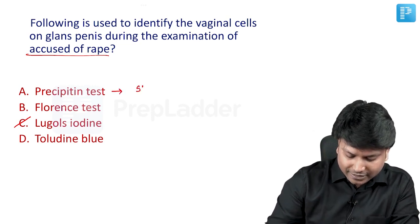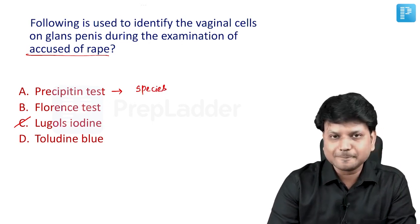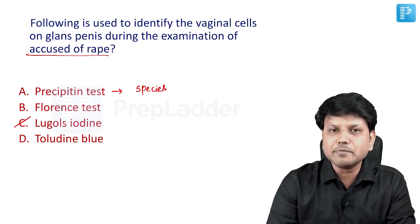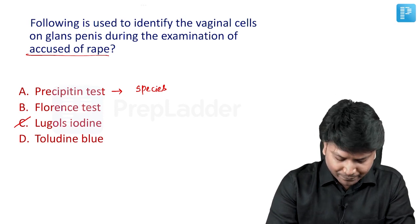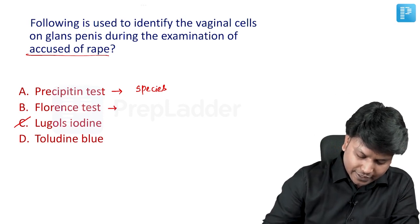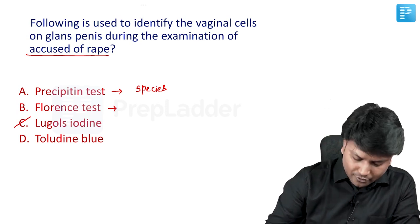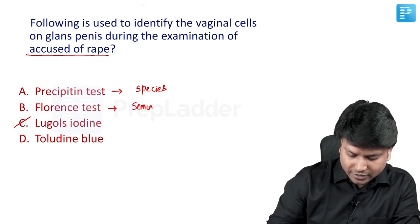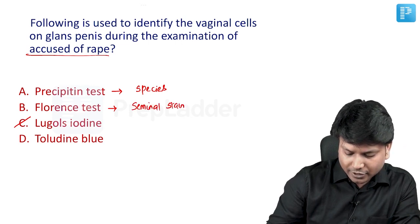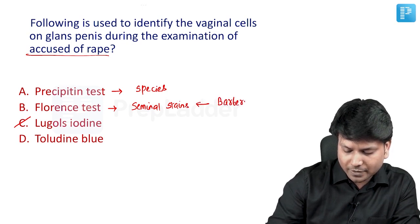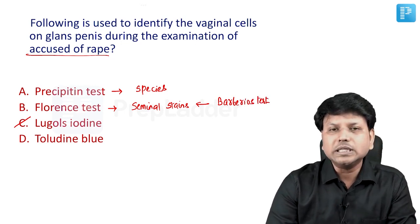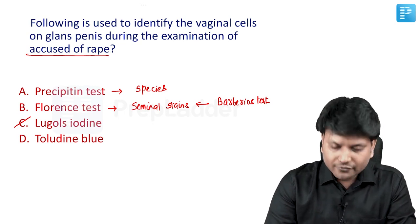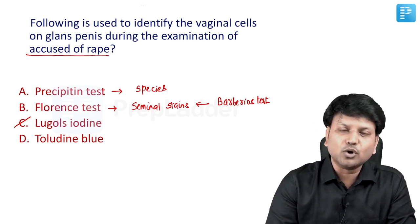Looking at the other options: the precipitin test is meant to identify the species — whether human or non-human — used in seminal examination. Florence test is also used in seminal stain examination. Remember Florence test and Barbirio's test are two important tests for seminal stain examination. In Barbirio's test we get yellow needle crystals, whereas in Florence test we get brown rhombic crystals.